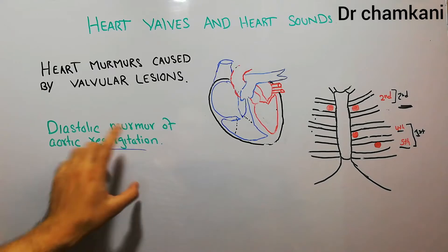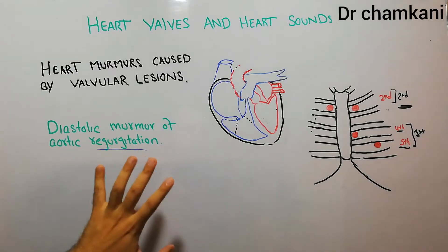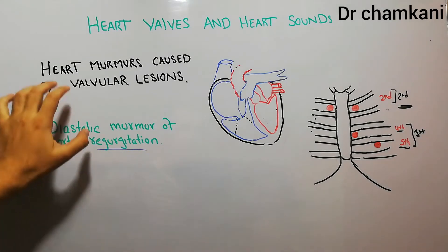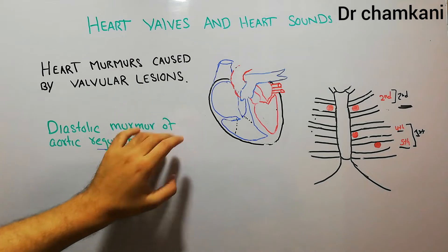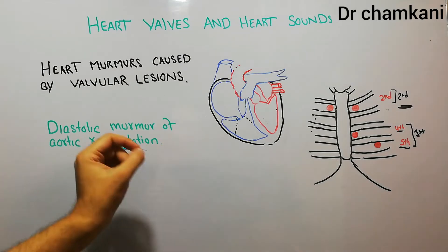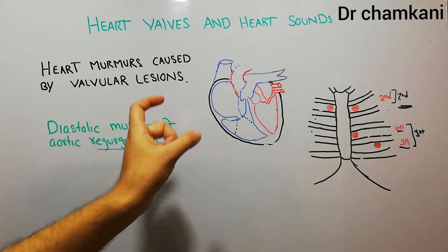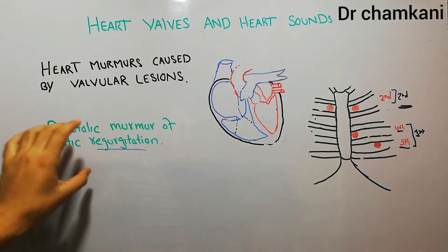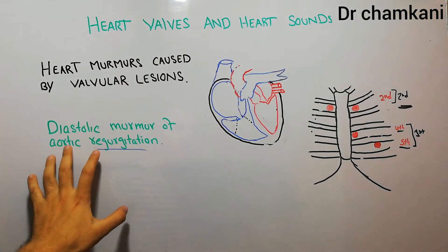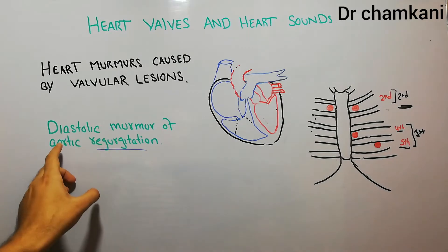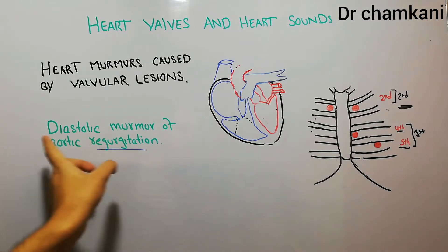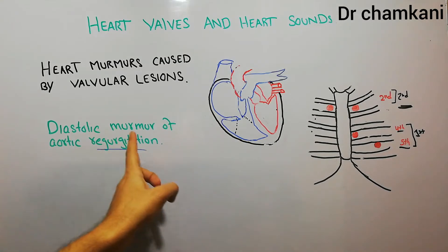Today we are going to talk about diastolic murmur of aortic regurgitation. As we have started discussing heart murmurs caused by valvular lesions, we previously discussed stenosis, regurgitation, and then we discussed in detail the systolic murmur of aortic regurgitation. So today we are going to discuss diastolic murmur of aortic regurgitation.